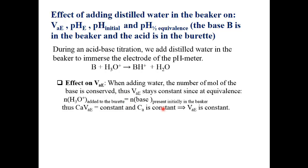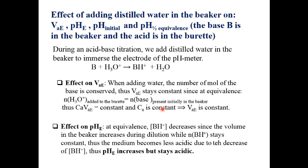What is the effect on pH at equivalence? At equivalence we have the conjugate acid of the weak base. Its concentration will decrease because the volume in the beaker increases during dilution, even though the number of moles stays constant. So the pH increases, but it stays acidic due to the presence of the conjugate acid of the weak base.